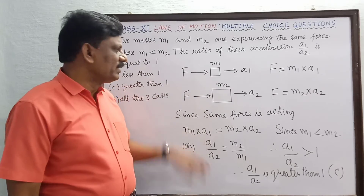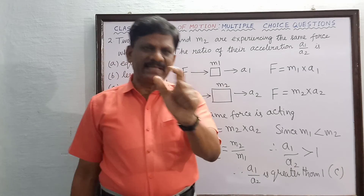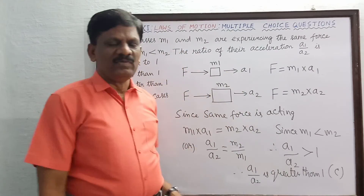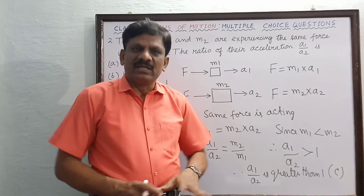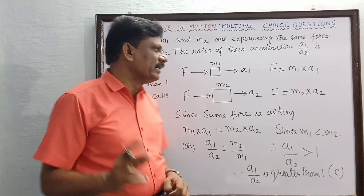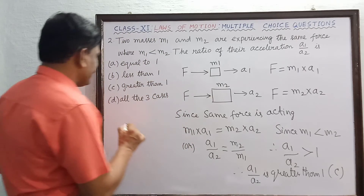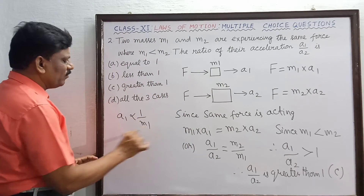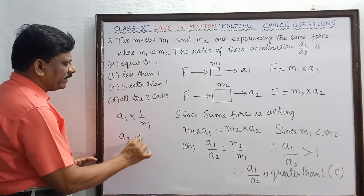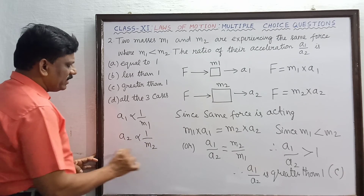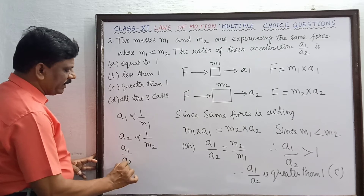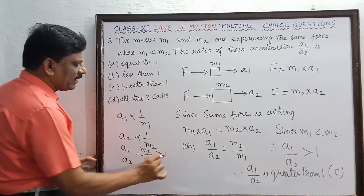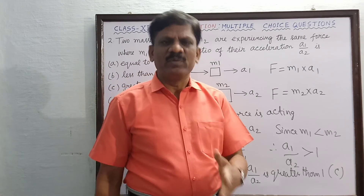For competitive exams, we should answer this directly. Since acceleration is inversely proportional to mass, a1 is inversely proportional to m1 and a2 is inversely proportional to m2. Therefore, a1 by a2 equals m2 by m1, which is greater than 1. Please practice answering this way.